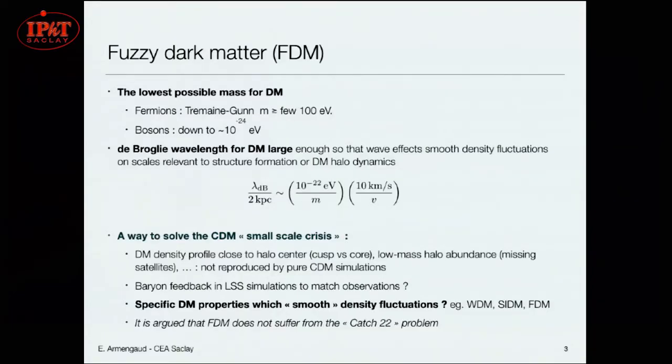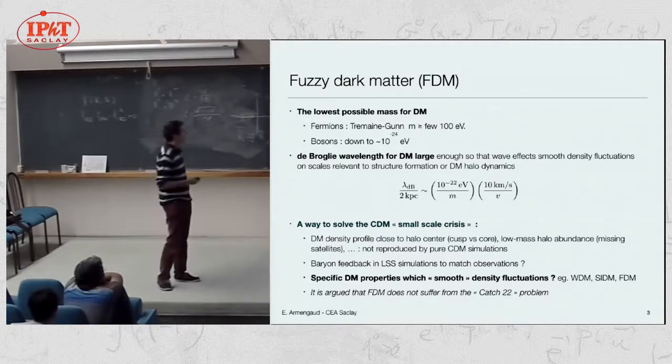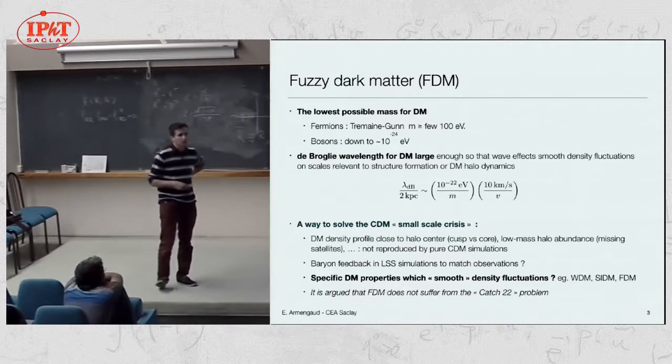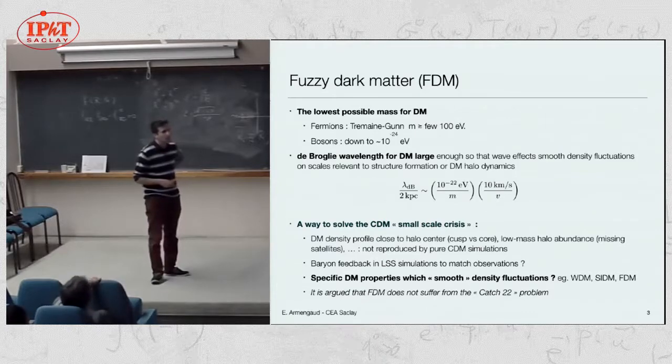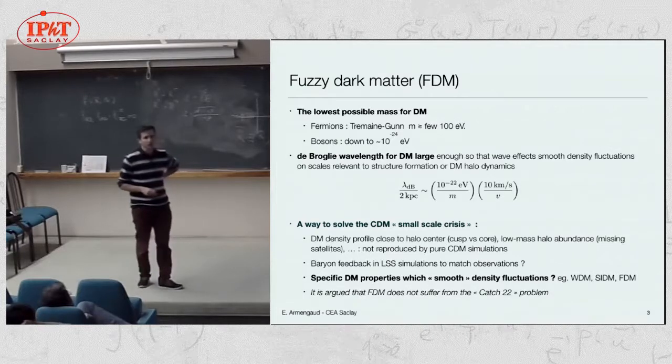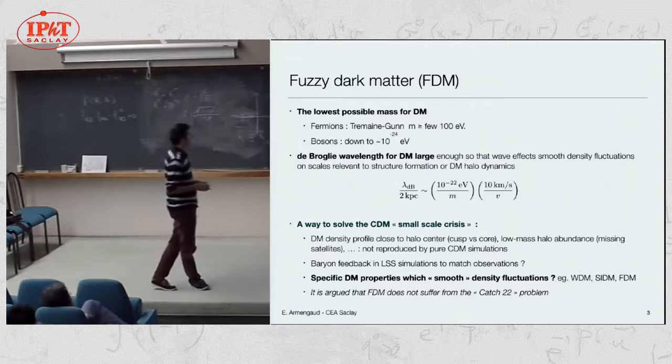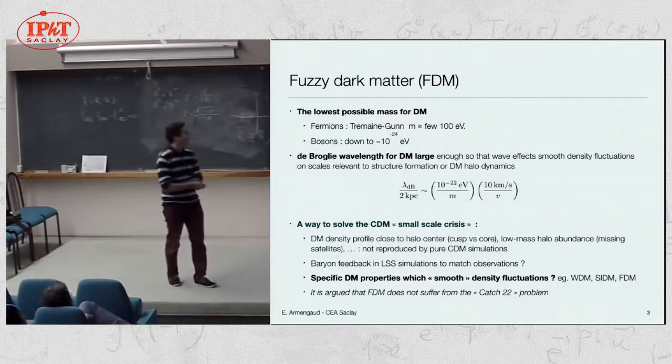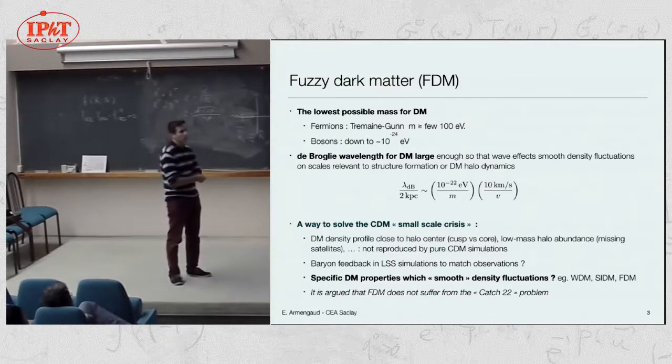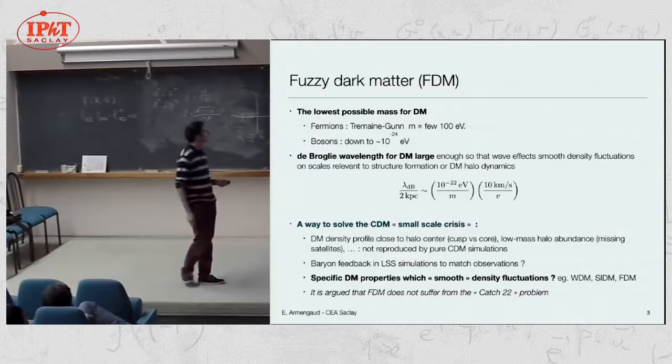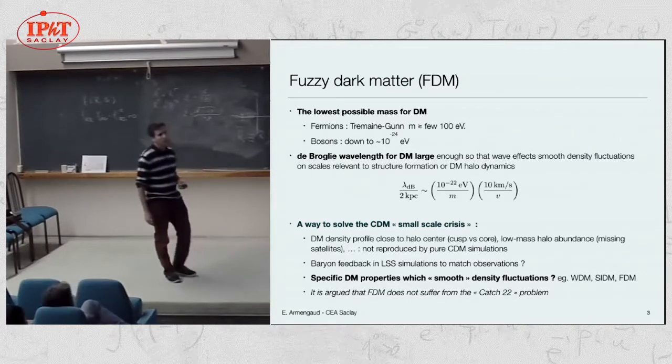The idea behind this is, first of all, what is the lowest possible mass for a dark matter particle. If this is a fermion, then the Pauli exclusion principle applied in some astrophysical objects, in particular dwarf galaxies, implies that the mass must be larger than something like 400 eV in a model independent way. If dark matter particles are bosons, so it's a bosonic field, the mass can be much smaller. The standard QCD axion is typically a micro to milli electron volt. Nothing forbids dark matter masses down to something like 10 to the minus 24 eV.